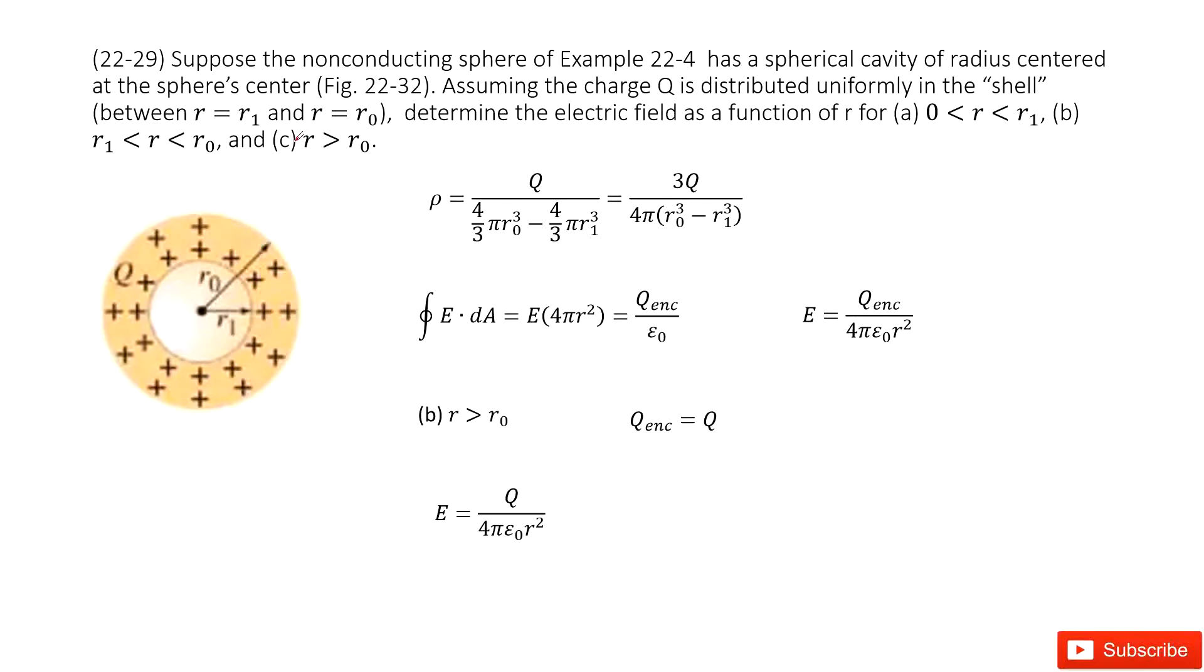The third one: R is larger than R₀. There, we draw the Gaussian surface, look like this one. We can see the enclosed charge is just equal to Q. It tells us the Q is distributed on this shell. So the final answer looks like this one. Thank you.